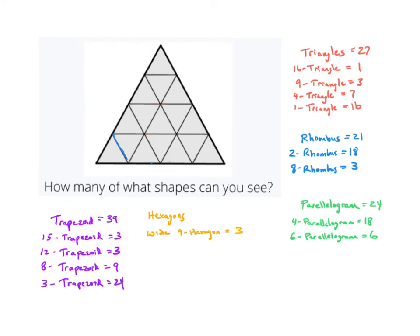I see some regular hexagons — one, two, three — and there are only going to be three of those, because no matter what, when you turn a regular polygon on its side it's going to be congruent. So I'll call that a regular six-hexagon, with six triangles in it, and there are three of them.